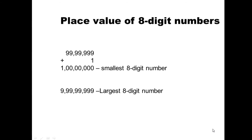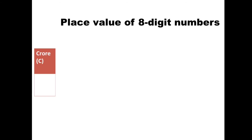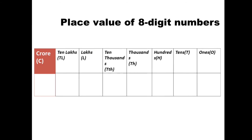We know the place values up to the 7-digit number. The place value of the 8th digit is crores. So the full place value sequence is: ones, tens, hundreds, thousands, ten thousands, lakhs, ten lakhs, and now we are introduced to the 8th digit — the crores place.